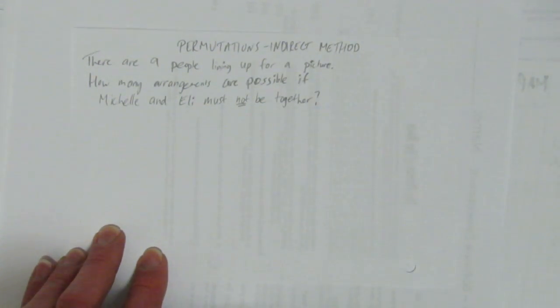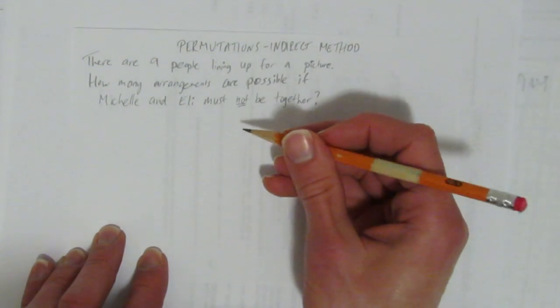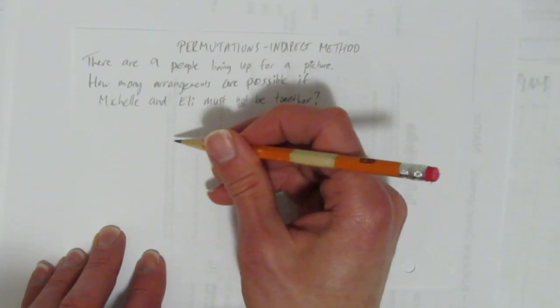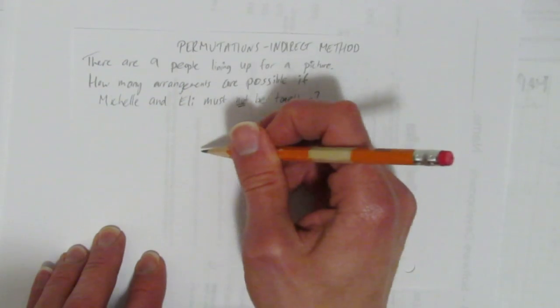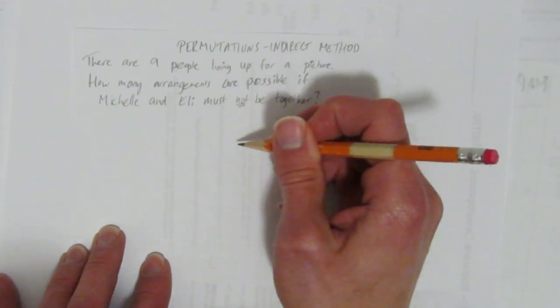That's the key. Well, it's going to be really hard to think of all the ways that Michelle and Eli cannot be together. It could be Michelle, then two people, then Eli, or Michelle, then three people, then Eli, Michelle, then four people, then Eli, and how do we know?